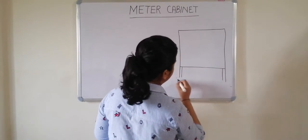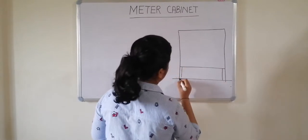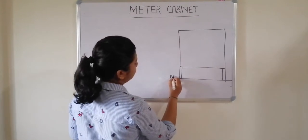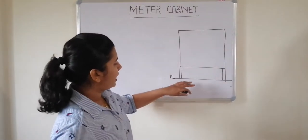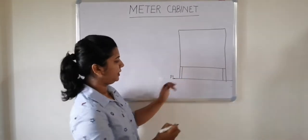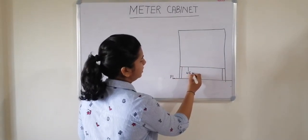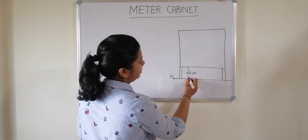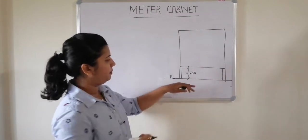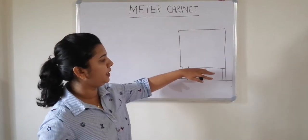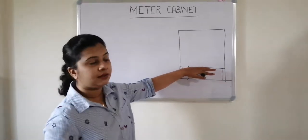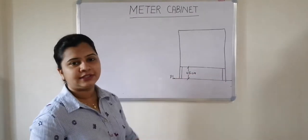This is the stand of it, and this is your plinth level. Now the height of meter panel from this plane should be not less than 45 centimeter. The minimum height from the plinth level or the ground level to your meter panel should be 45 centimeter.